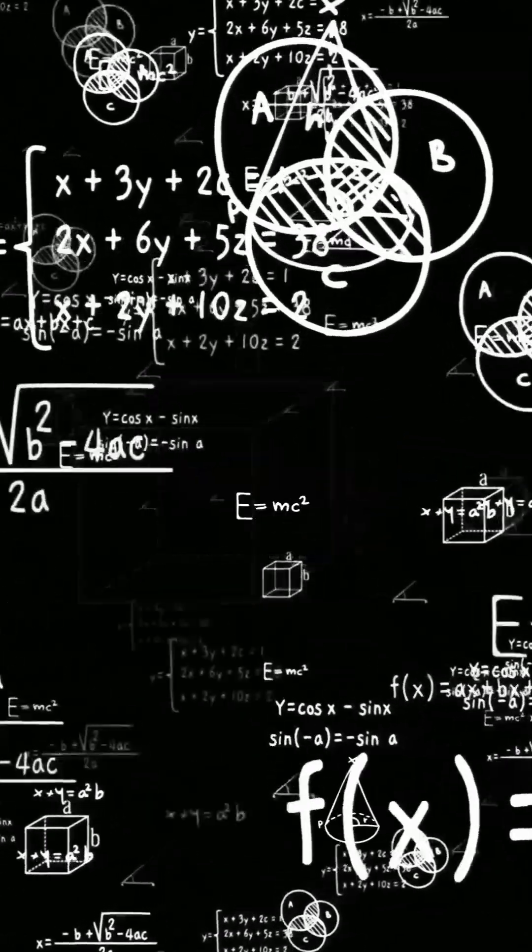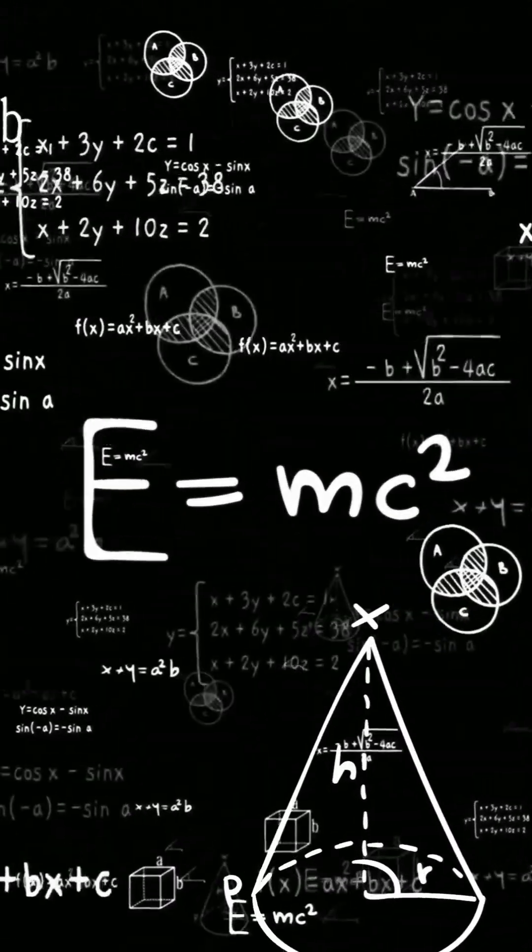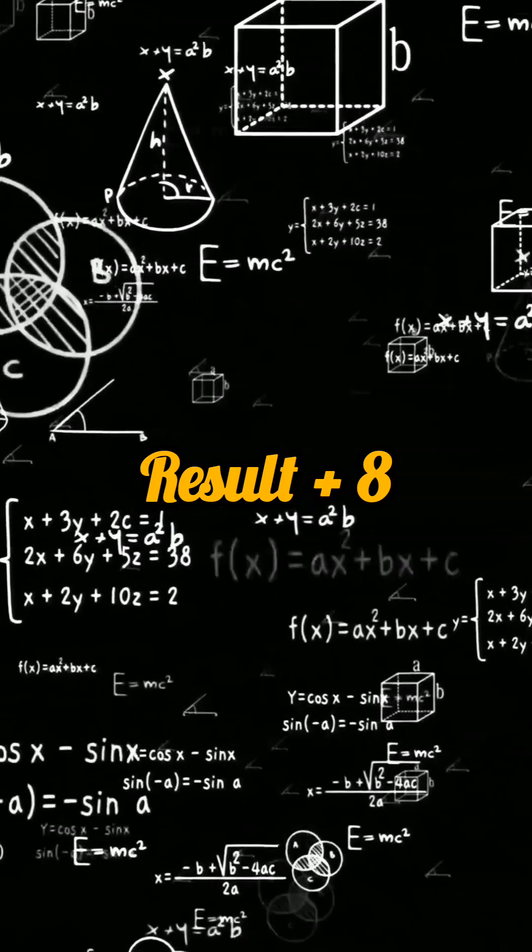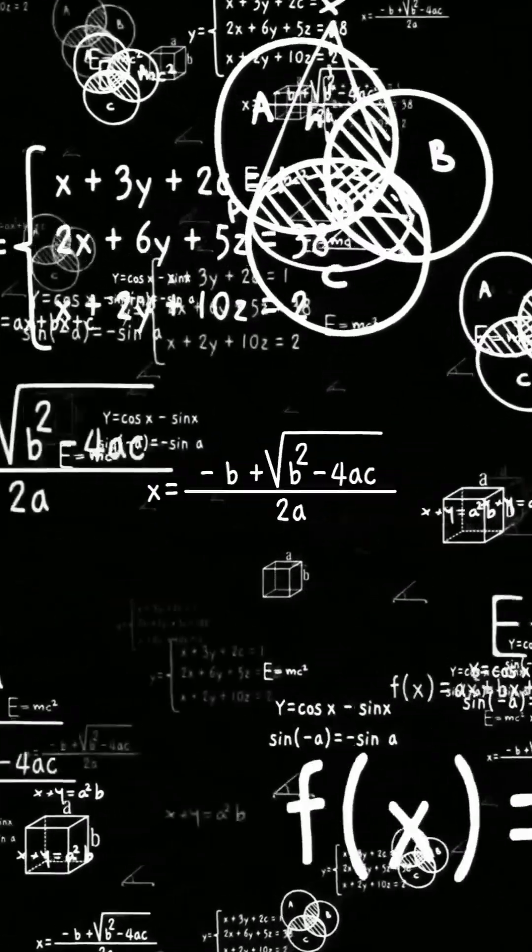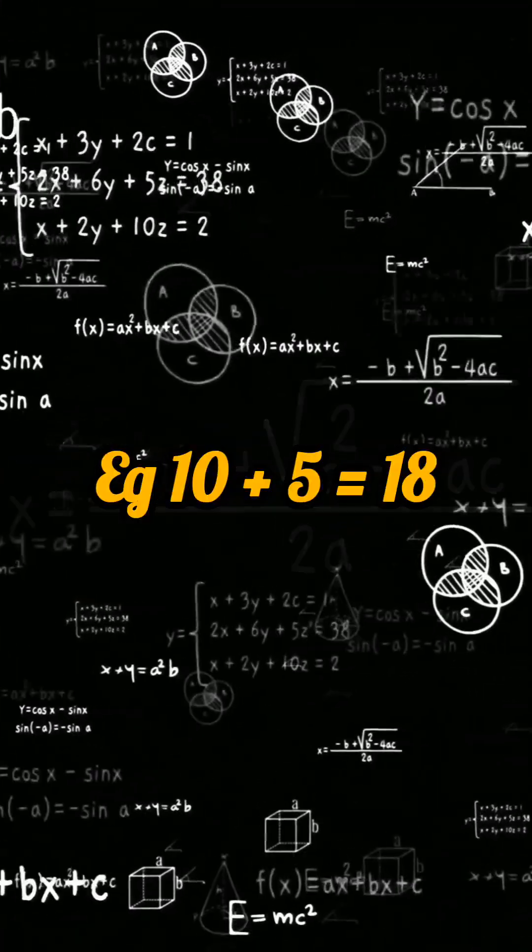Next, add eight to the result. Take the number you got after doubling and simply add eight to it. So, if your double number was ten, adding eight would make it eighteen.